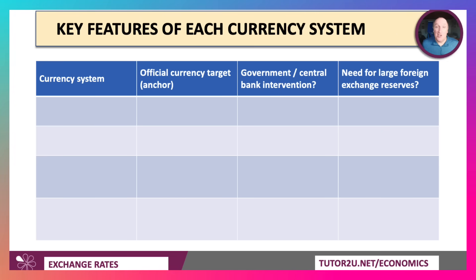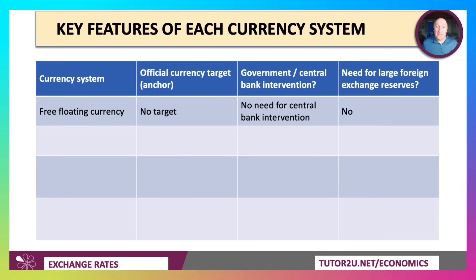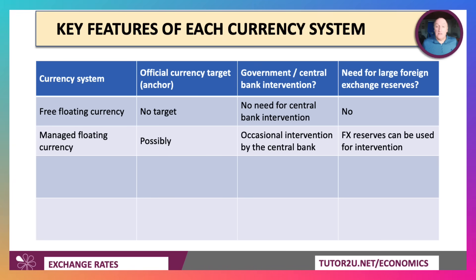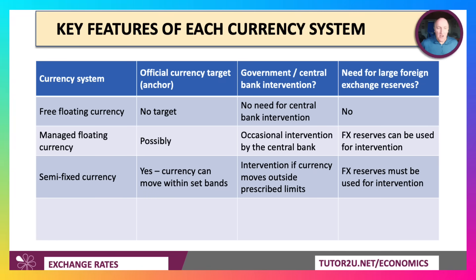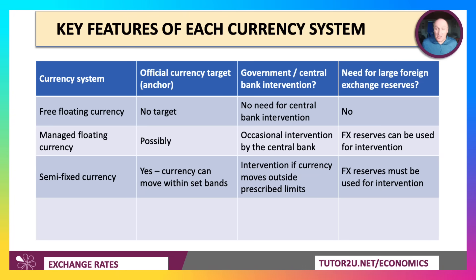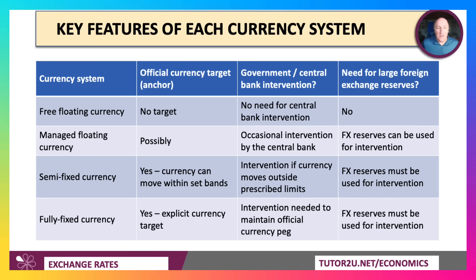Here's a quick summary. Free floating: no currency target, no central bank intervention, and you don't necessarily need big currency reserves because you're not using those reserves to manipulate the exchange rate. Managed floating: possible target, occasional intervention — foreign exchange reserves can need to be used, although the central bank can also use interest rate changes to try to move the exchange rate up or down. With a semi-fixed system, the currency can move day-to-day but the parameters or bands within which it can move are fixed. Intervention is needed if the currency moves outside the prescribed limits.